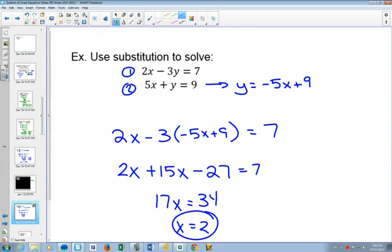Wait, negative 27? What? Yeah, because you have to distribute the negative 3, right? Negative 3 times this and negative 3 times 9.